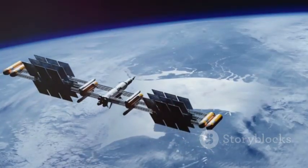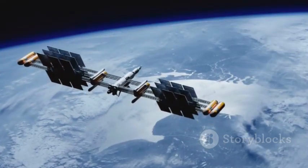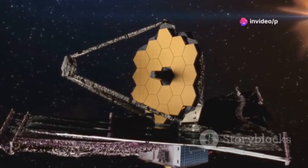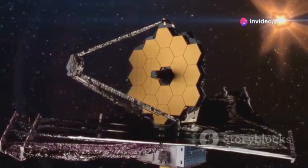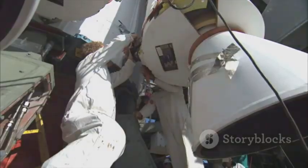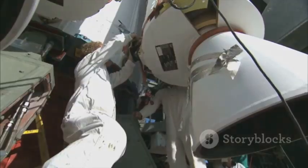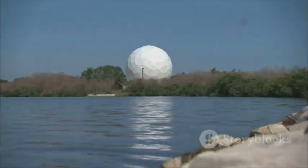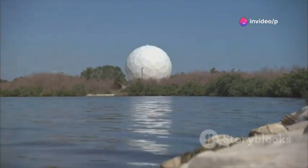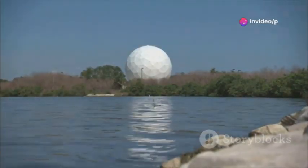To function at its best, Webb must stay incredibly cold, colder than minus 370 degrees Fahrenheit, protected by a five-layer sun shield as large as a tennis court, which blocks heat and light from the Sun, Earth, and even the Moon. It's a marvel of engineering and international collaboration, built by NASA, the European Space Agency, and the Canadian Space Agency, after decades of planning, innovation, and teamwork.